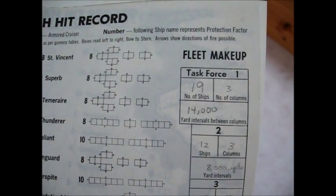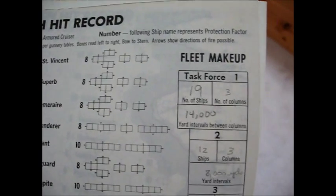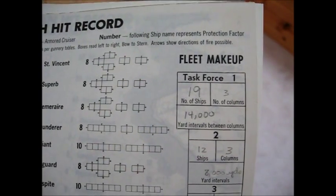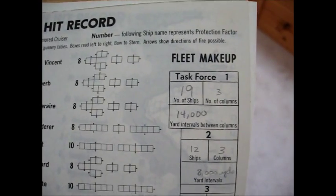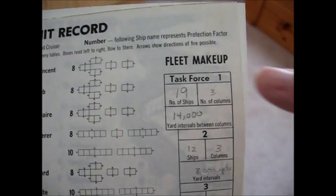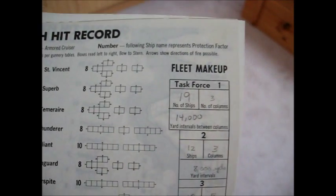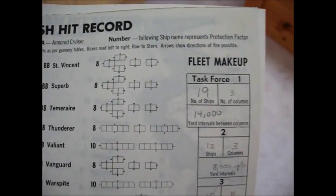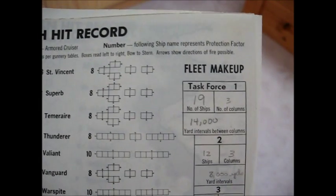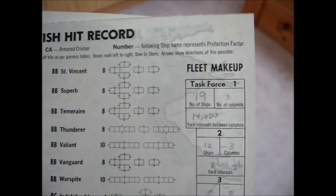Prior to the battle, the British would have made up their task forces. In this case the Germans have encountered task force number one, which for the British consists of 19 ships arranged in three columns, 14,000 yards apart. All that information would have had to have been decided before the battle, actually in the search procedure.